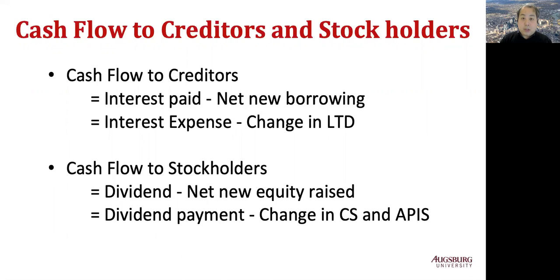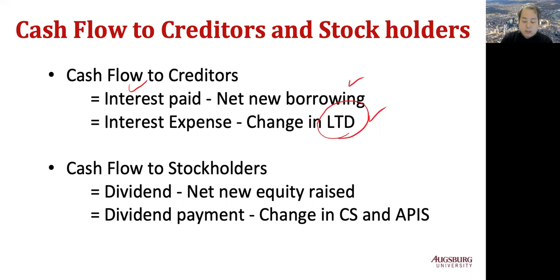To get the cash flow to creditors, there are two factors that affect this cash flow. The first factor is interest expense, and the second factor is net new borrowings, which is the change in net long-term debt. If interest is paid to creditors, then cash flow to creditors increases. If the company borrows more money from creditors, then cash moves from creditors to the company — that is a negative factor of cash flow to creditors.